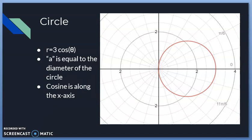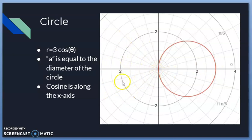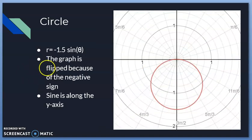All of the graphs shown are from Desmos — it's easier to showcase what they look like. Here we have a circle graph with r = 3·cosθ. Three is our a value, and a equals the diameter of the circle. Cosine places the circle along the x-axis. If we put a negative in front of a, the graph would flip the other way.